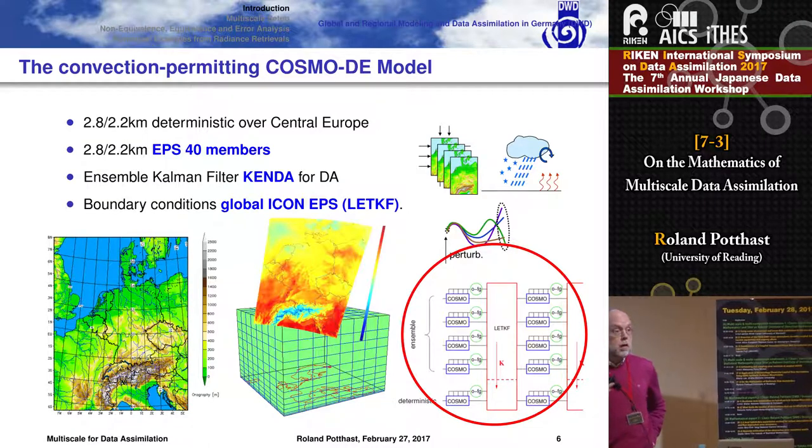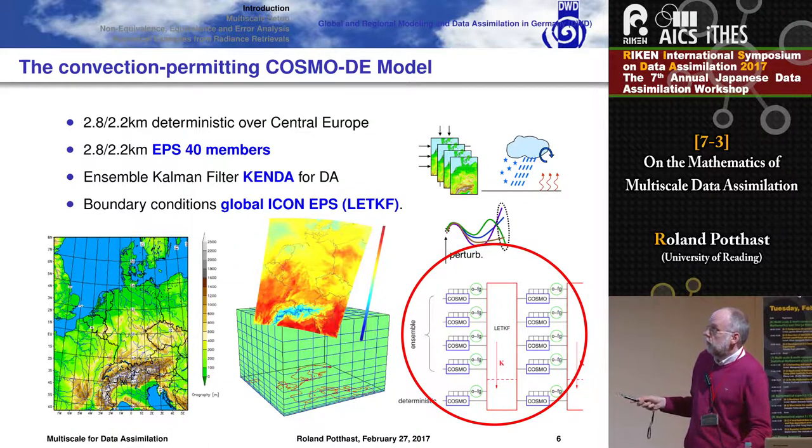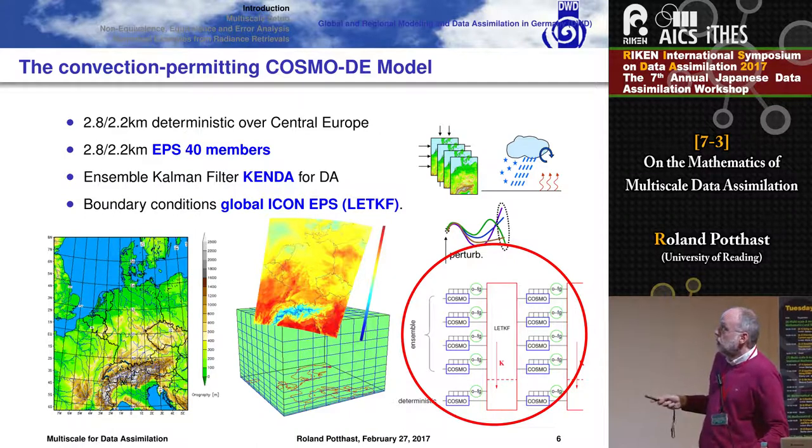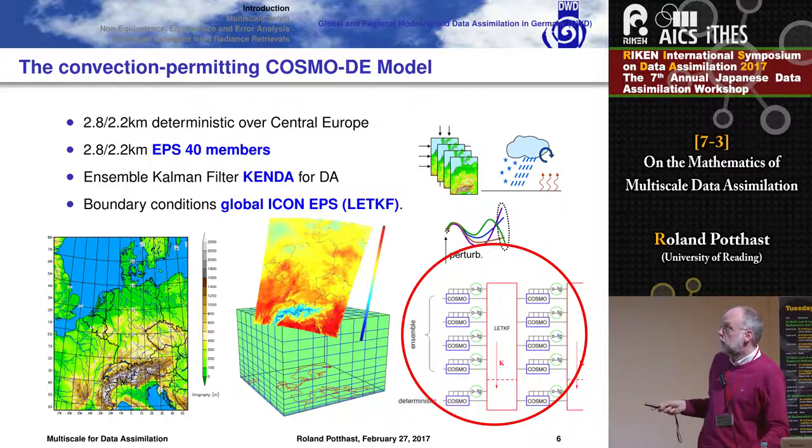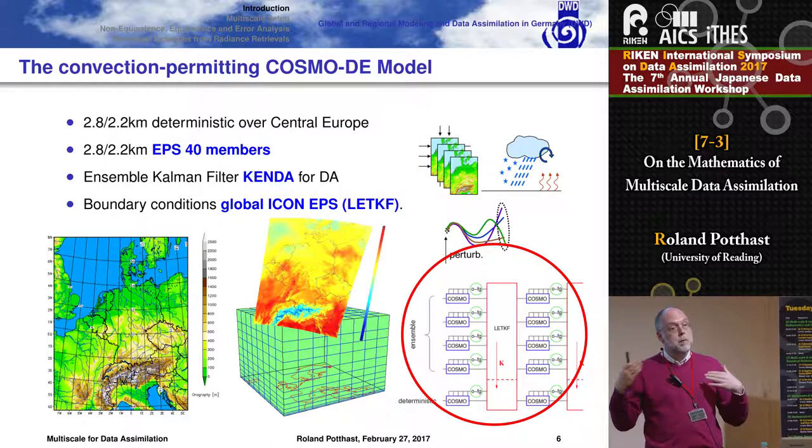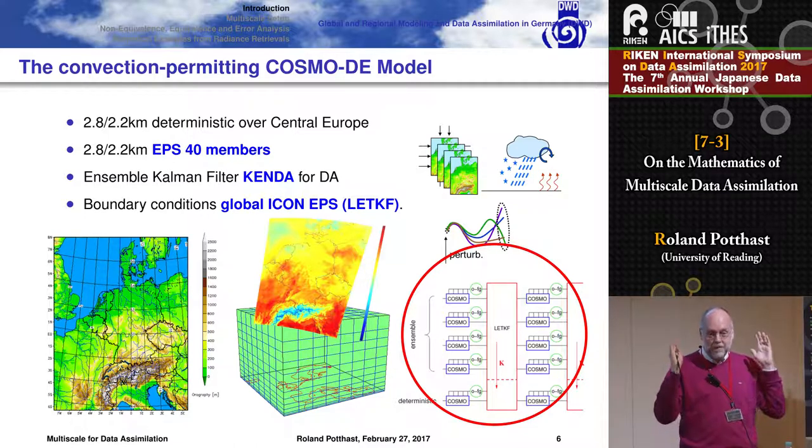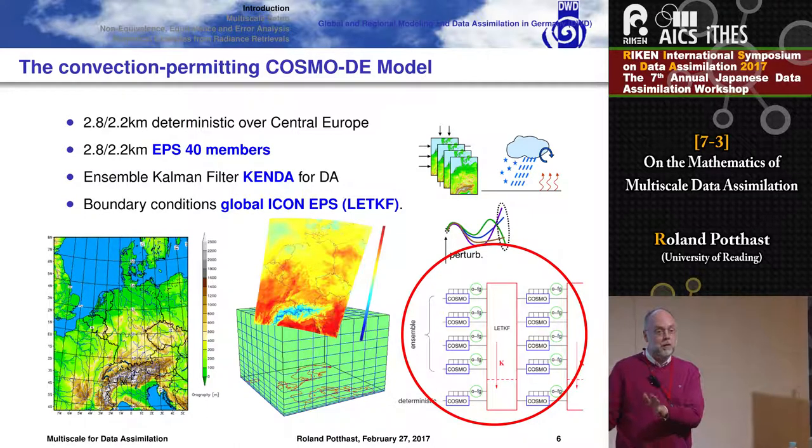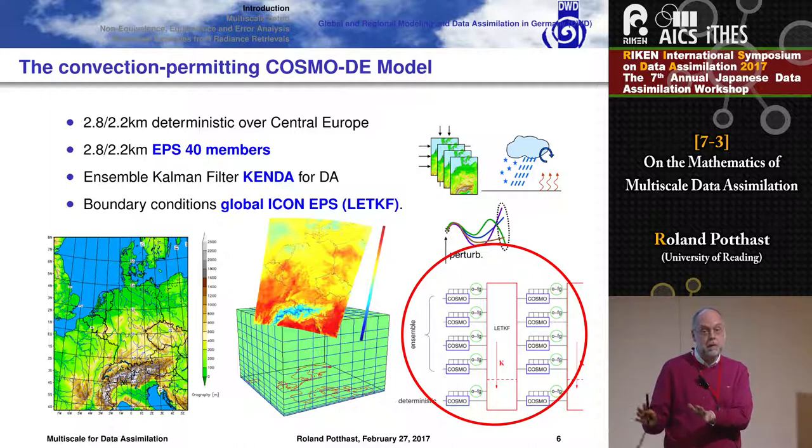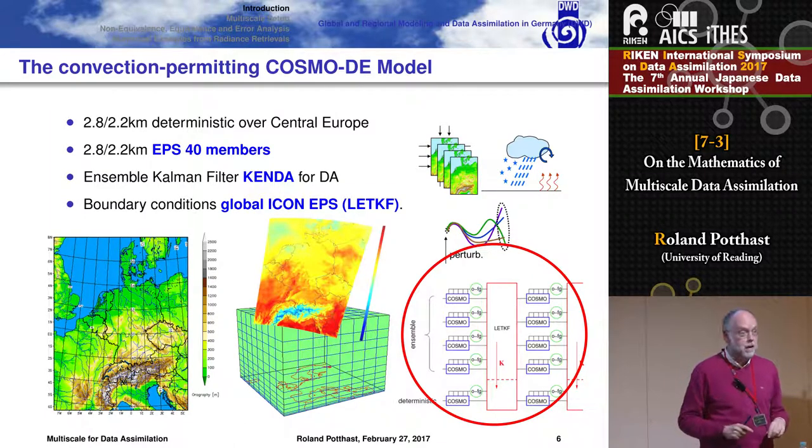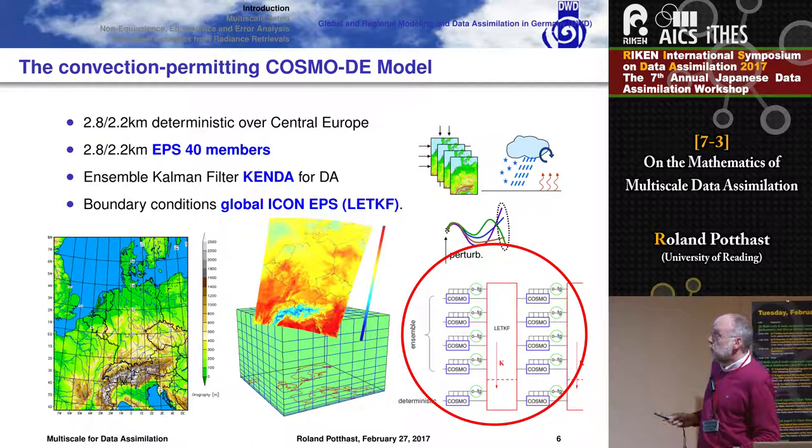We have a convection permitting regional system with 2.8, hopefully soon 2.2 kilometers operational. It's just becoming operational in March now, 40 members at the same resolution. It's also an LETKF based system. We call it KENDA, kilometer scale ensemble data assimilation system. We now use basically the EPS boundary conditions generated by the ensemble Kalman filter on the global scale to drive each ensemble member on the convective scale. That has proven to be much better than any of the multi-model approaches we had in the past. It's like 10-15% improvement on basically every variable we can look at.